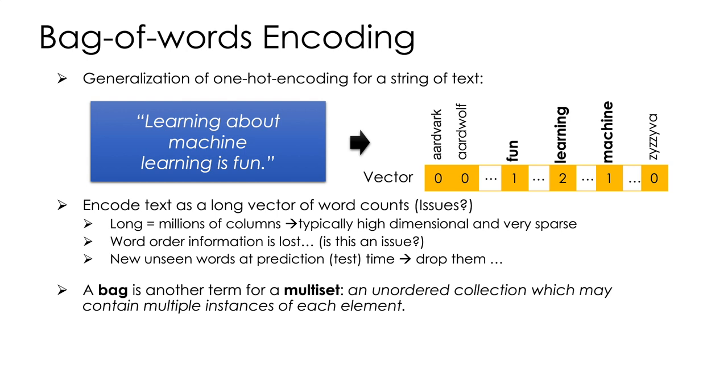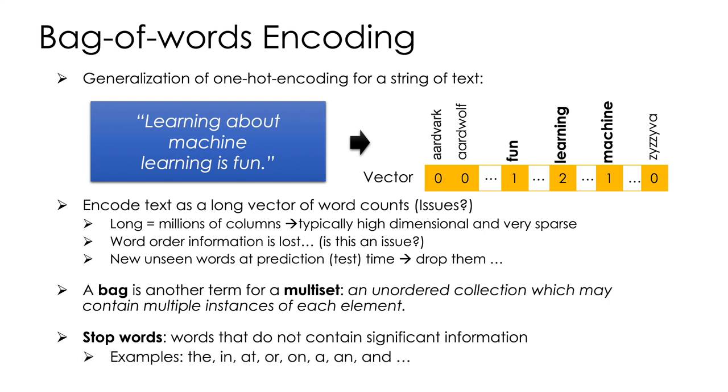A side note on terminology, a bag is another term for multiset, an unordered collection which may contain multiple instances of each element. In this particular example, the word learning shows up twice. So we are counting the presence of the words fun, learning, and machine, and also counting the number of times that learning occurs. One final point, often when using these bag of words models, we'll drop things that are not informative. Words like and, the, or, these are all stop words, words that don't contain significant information, and they are typically removed.